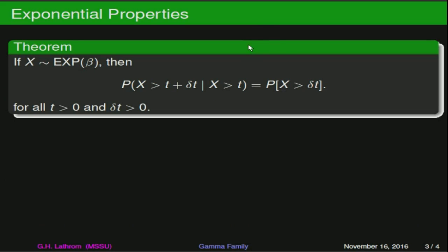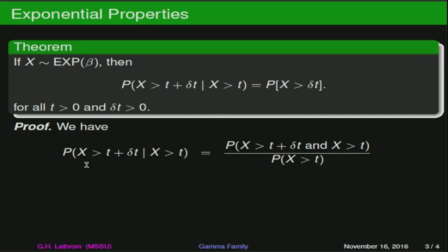If x is distributed with an exponential distribution with parameter beta, then the probability that x is greater than t plus delta t, given that x is already greater than t, is equal to the probability that x is greater than delta t. We begin by using the definition of conditional probability: the probability that x is greater than t plus delta t, given that x is greater than t, equals the probability that x is greater than t plus delta t and greater than t, all divided by the probability that x is greater than t.